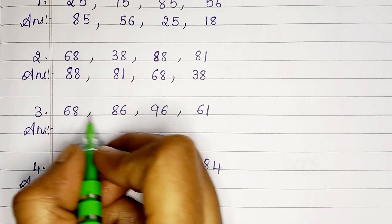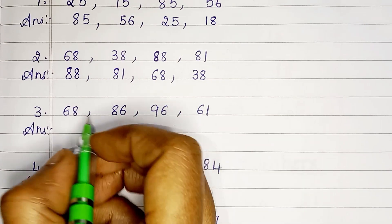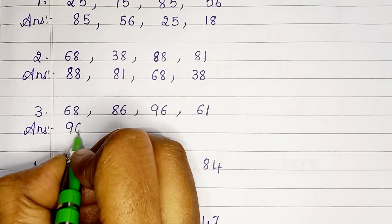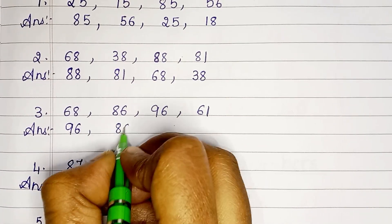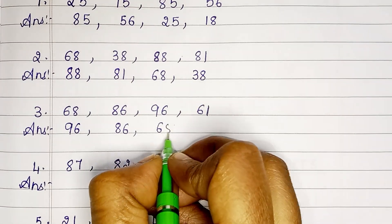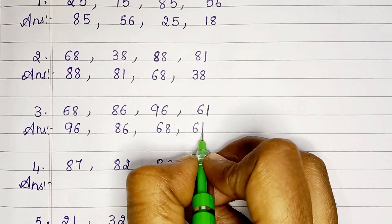Next: 68, 86, 96, 61. In descending order: 96, 86, 68, 61.